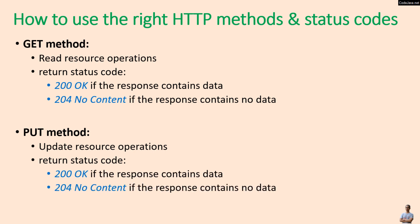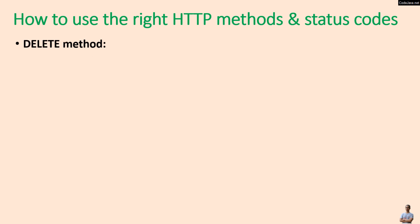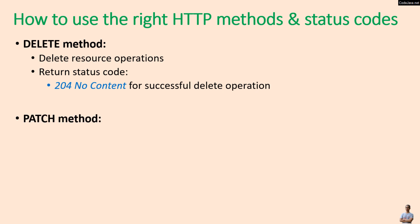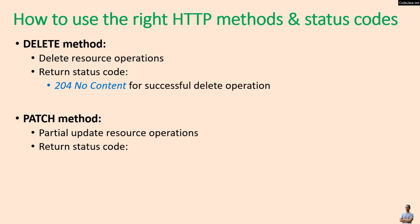For update operations, return 204 No Content if the response contains no data. You should use the HTTP DELETE method for delete resource operations and return 204 No Content for a successful delete operation. You should use the HTTP PATCH method for partial update resource operations and return 200 OK for successful partial update operations.